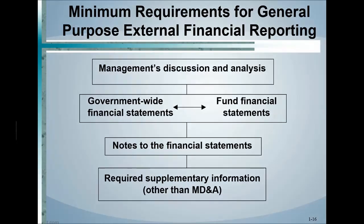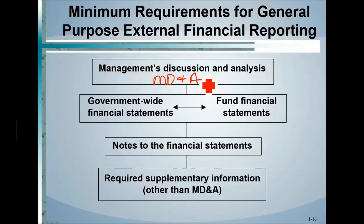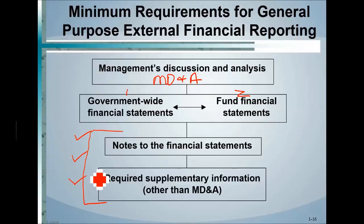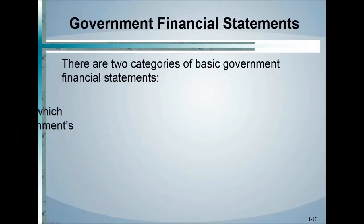The minimum requirements for general purpose external financial reporting — geared mostly toward state and local governments — include: management's discussion and analysis (MD&A), where management discusses issues and how they performed; two sets of financial statements: government-wide and fund financial statements; required supplementary information mandated by GASB; and any additional optional information the entity chooses to include.